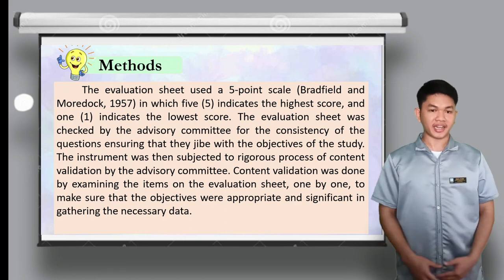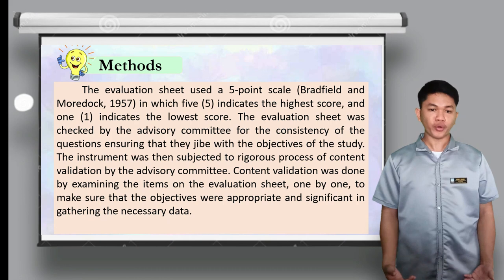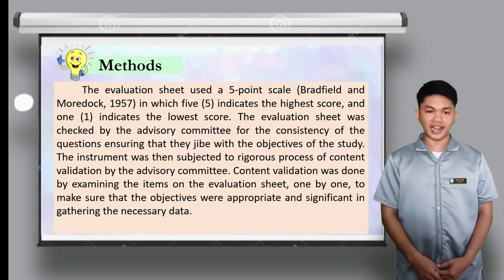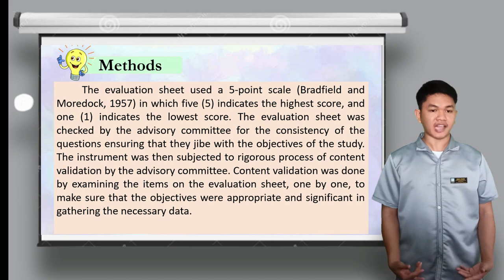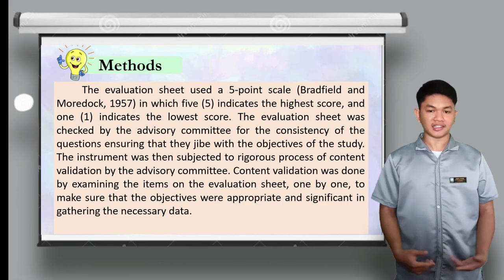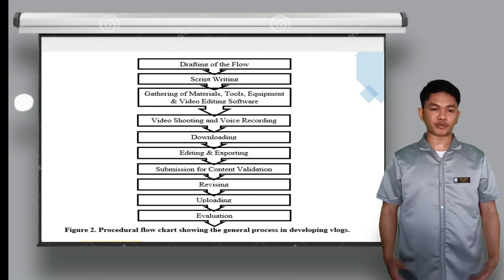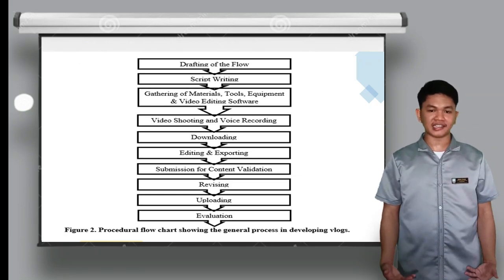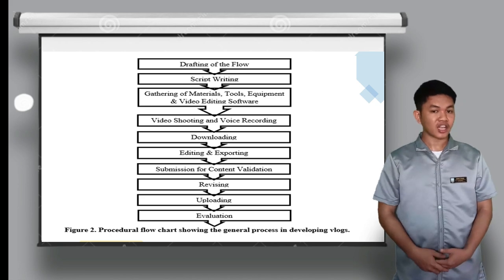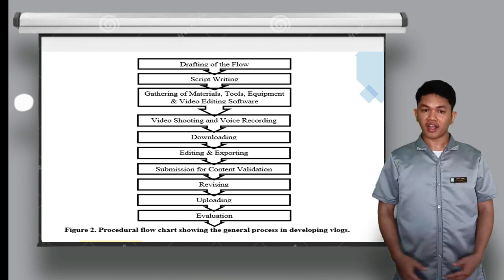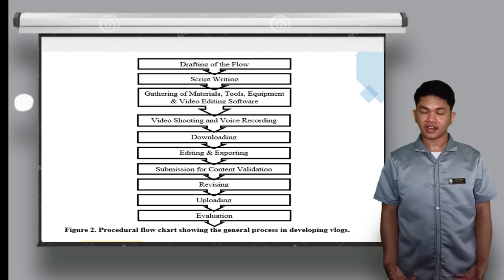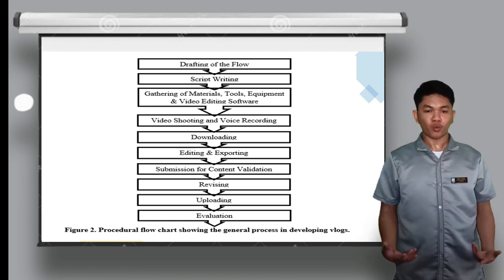The evaluation sheet used a five-point scale where five indicates the highest score and one indicates the lowest. It was checked by the advisory committee for consistency, and subjected to rigorous content validation by examining items one by one to ensure objectives were appropriate. The procedural flowchart for developing vlogs includes: drafting of the flow, script writing, gathering of materials, tools, equipment and video editing software, video shooting and voice recording, downloading, editing and exporting, submission for content validation, revising, uploading, and evaluation.